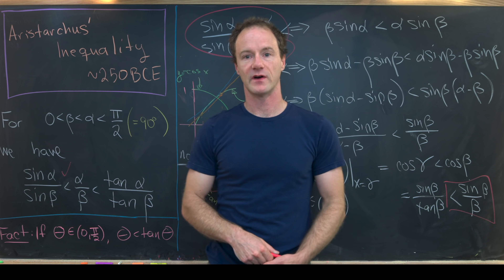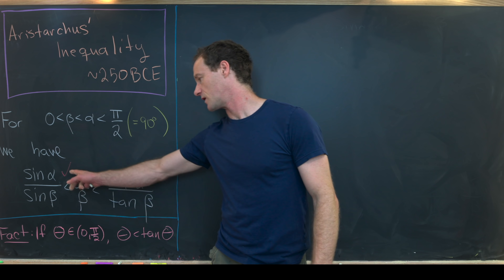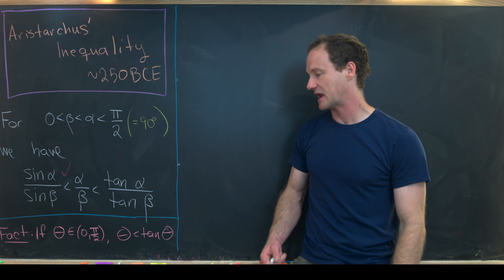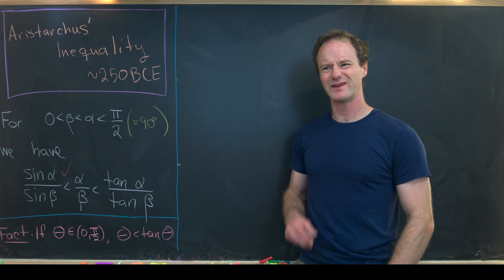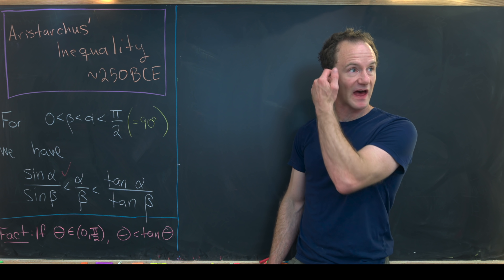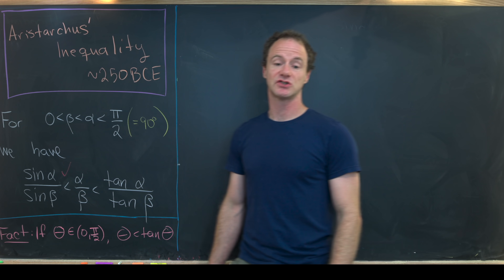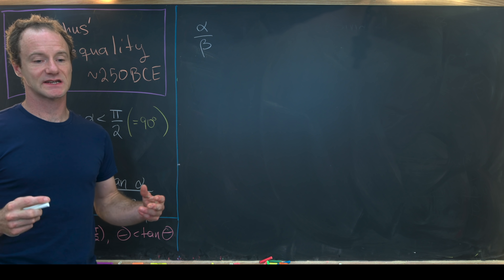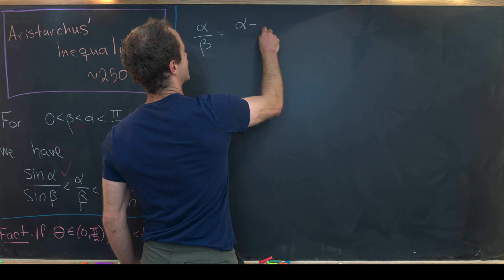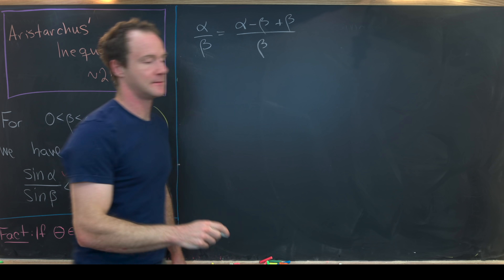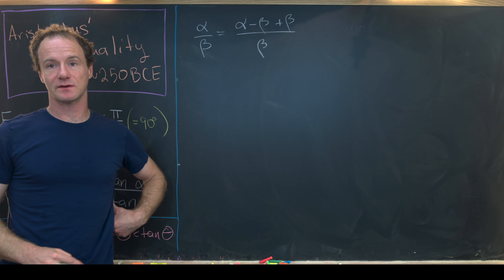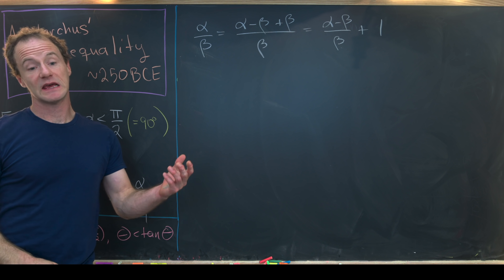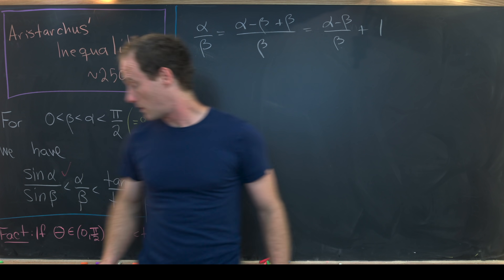We've shown sine(alpha) over sine(beta) is less than alpha over beta. Now we show alpha over beta is less than tan(alpha) over tan(beta). Starting with alpha over beta, we add zero to the numerator in the form of alpha minus beta plus beta over beta, which splits into alpha minus beta over beta plus 1. We then apply our fact: since alpha minus beta is less than pi/2, we have alpha minus beta less than tan(alpha minus beta).